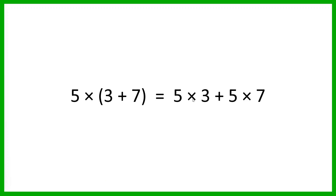Now if we look on this side, we have 5 times 3 — I'm multiplying the 5 by the first term — and 5 times 7, multiplying by the second one separately. So 5 times 3 is 15, plus 5 times 7 which is 35. 15 plus 35 is also 50. Both of these give me the same result, because of the distributive property of multiplication.